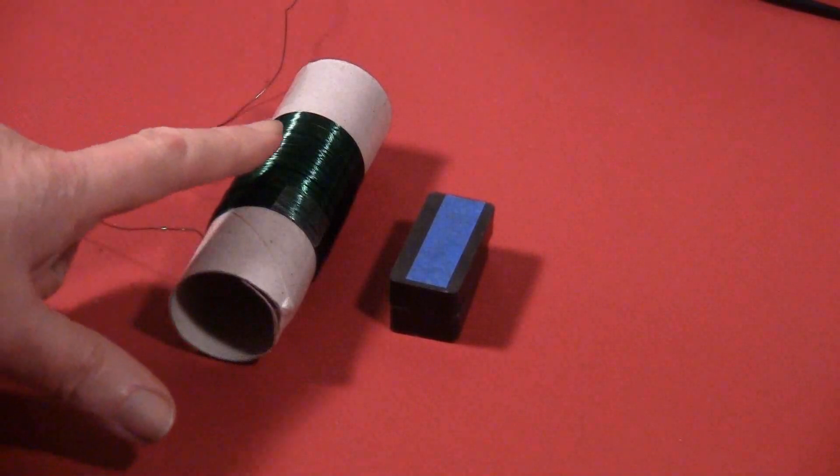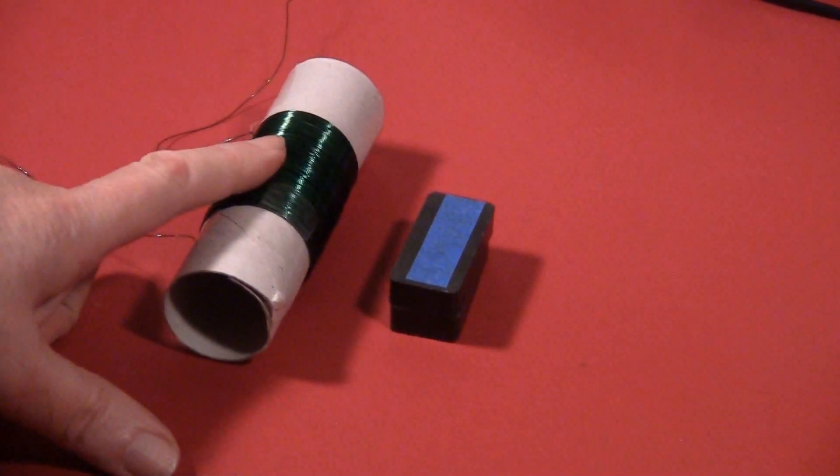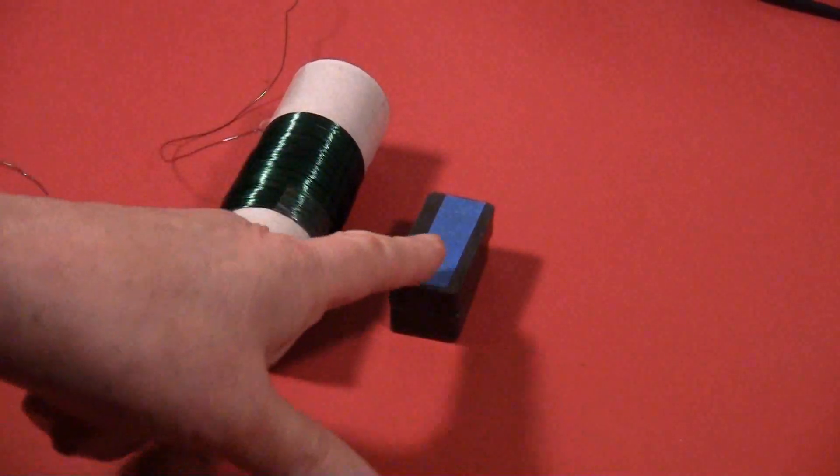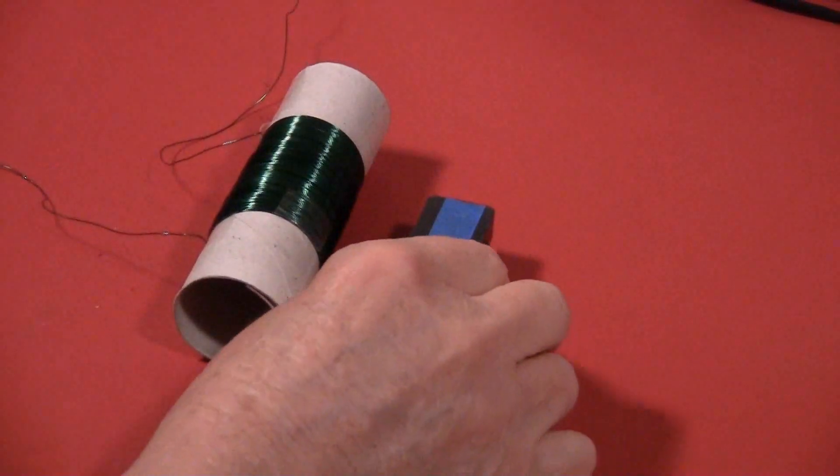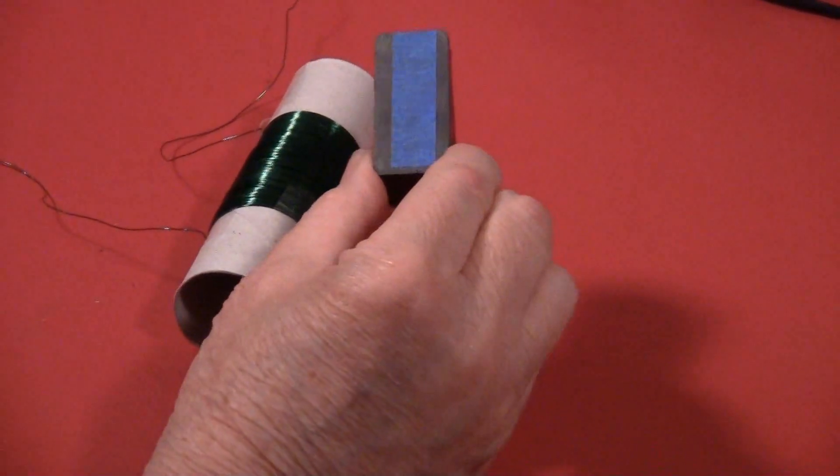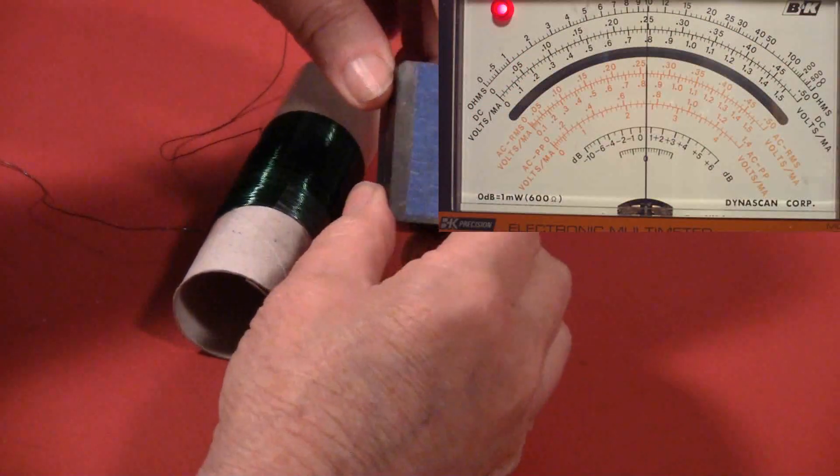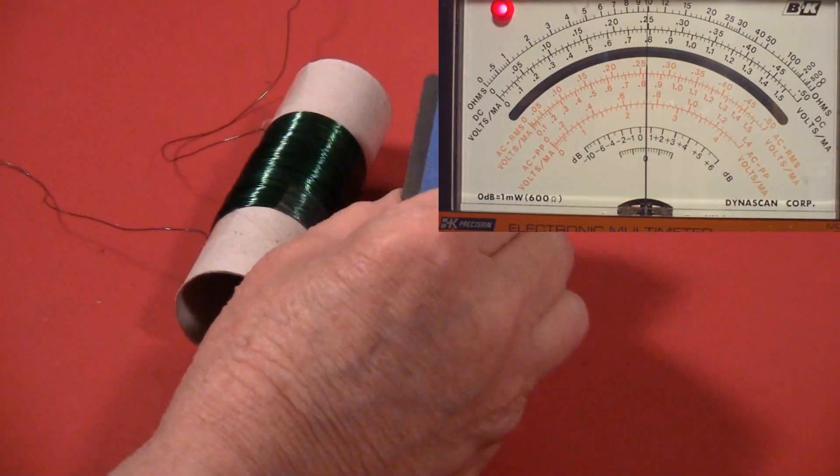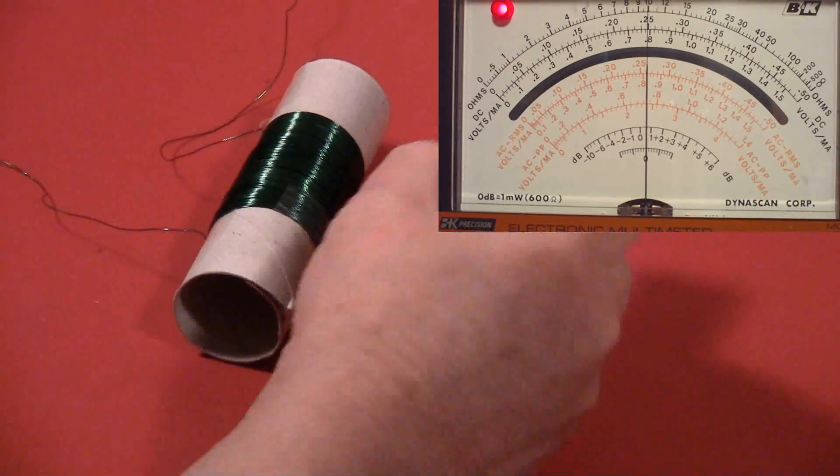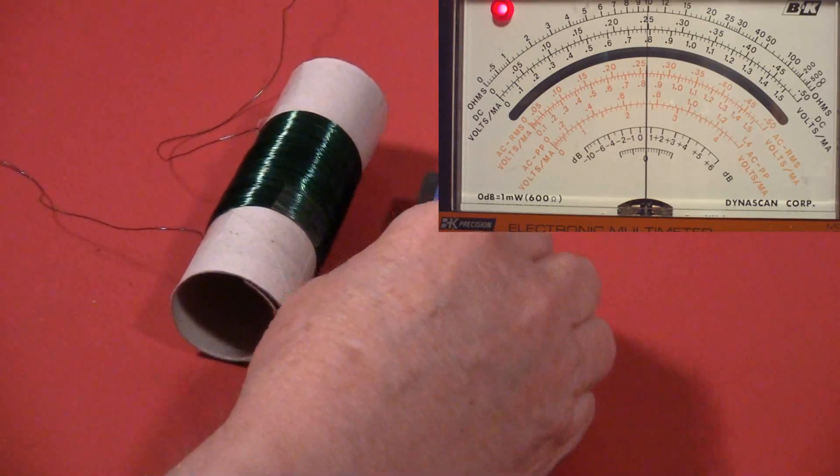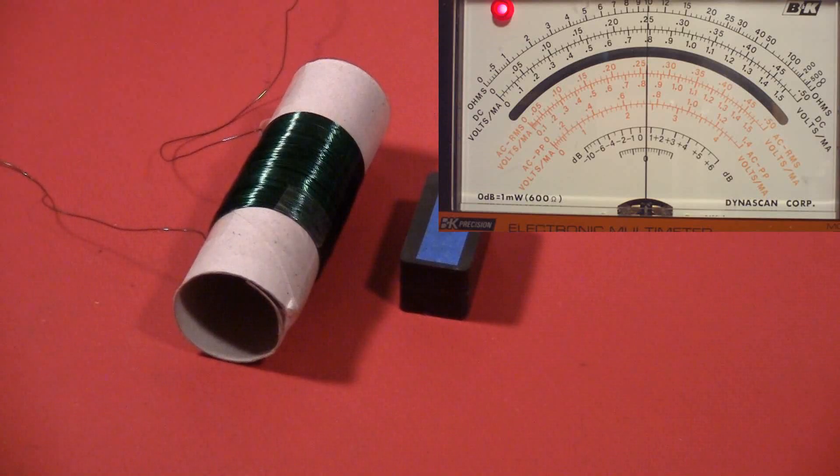Okay, here we have a coil of wire, a magnet, and I have taped one side of the magnet so we can tell that I have switched sides, and it's hooked up to a voltmeter.